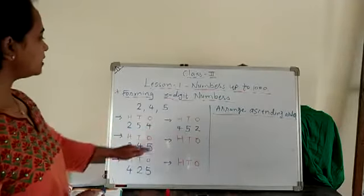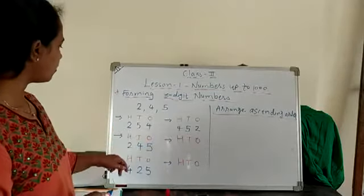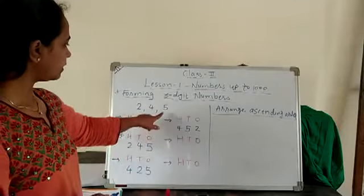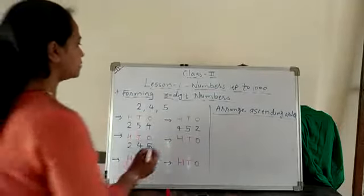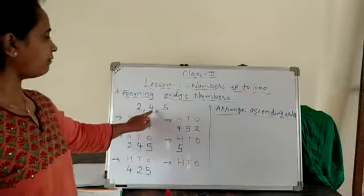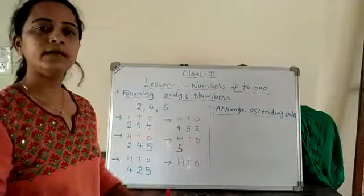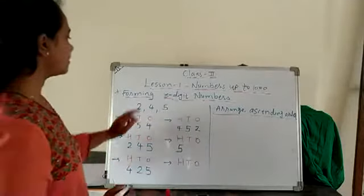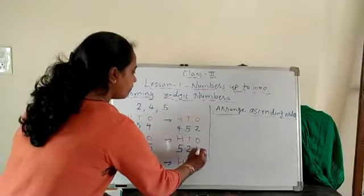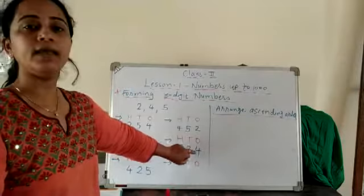Now change the 100s place. 4 is complete. So which number is left? 2, 4, then 5. So in the 100s place, take 5. Then remaining digits are 2 and 4. Take any one number in the 10s place. I will take 2 and then the remaining is 4. So our next number is 524.